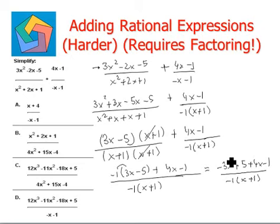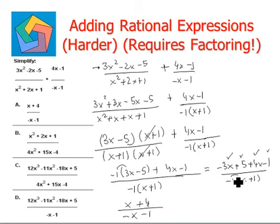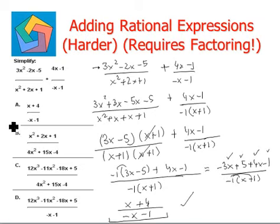Now negative 3x plus 4x is simply x, and 5 minus 1 is 4, divided by negative x minus 1. Distributing the negative 1 inside the parenthesis in the denominator, we get x plus 4 divided by negative x minus 1 as the final answer, which can be seen in option A.